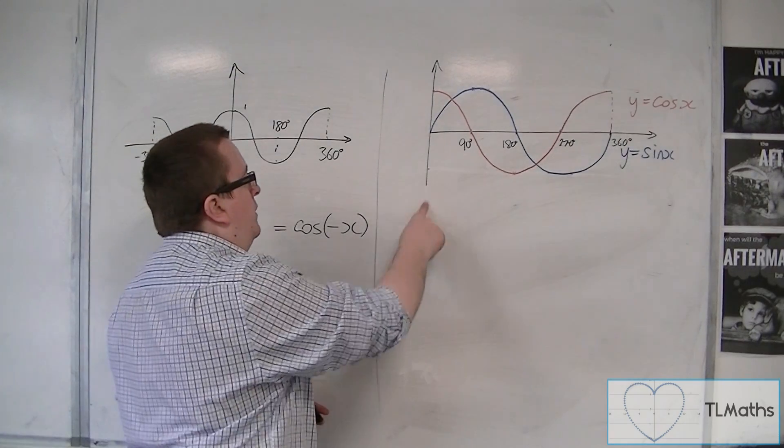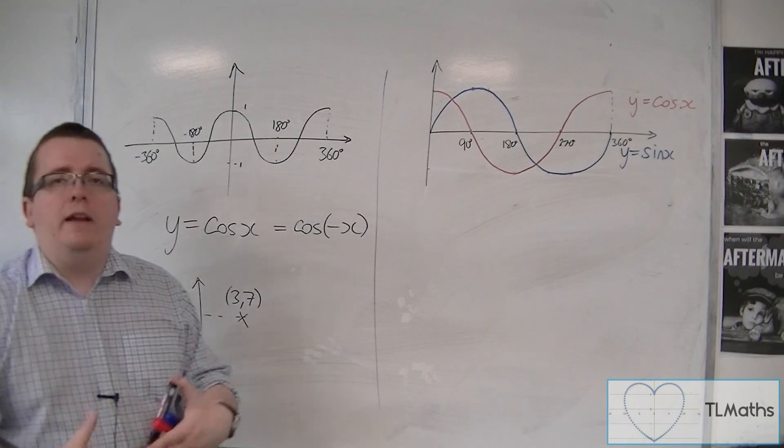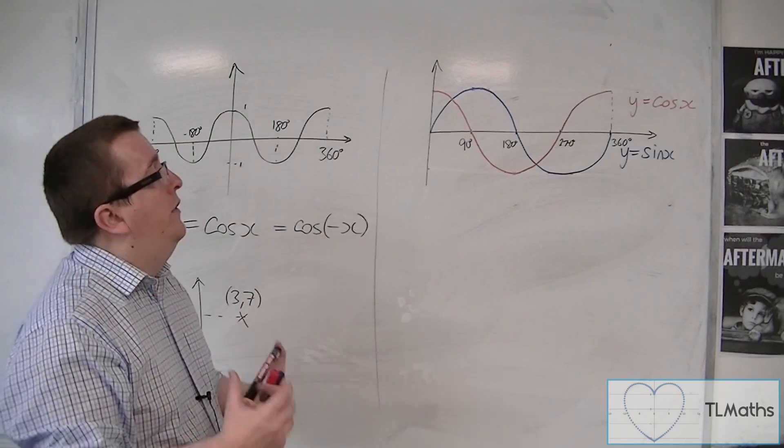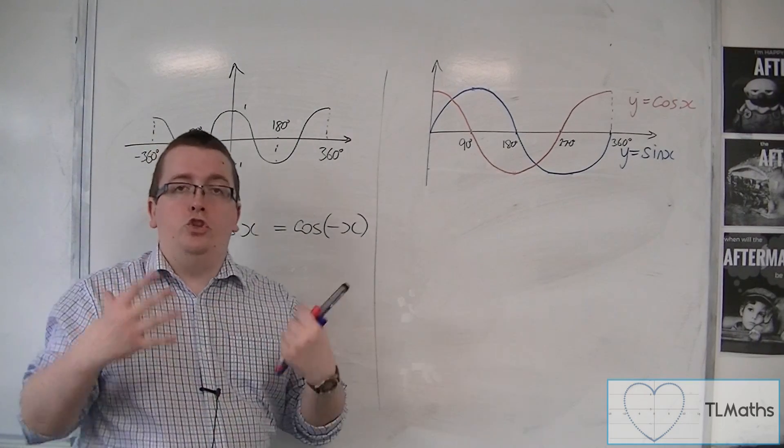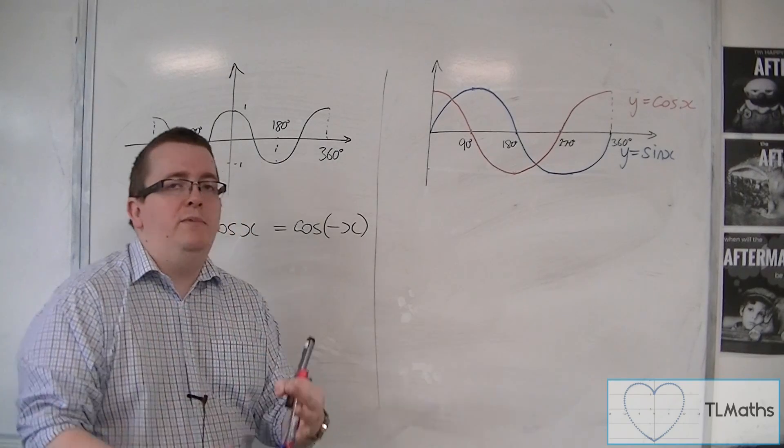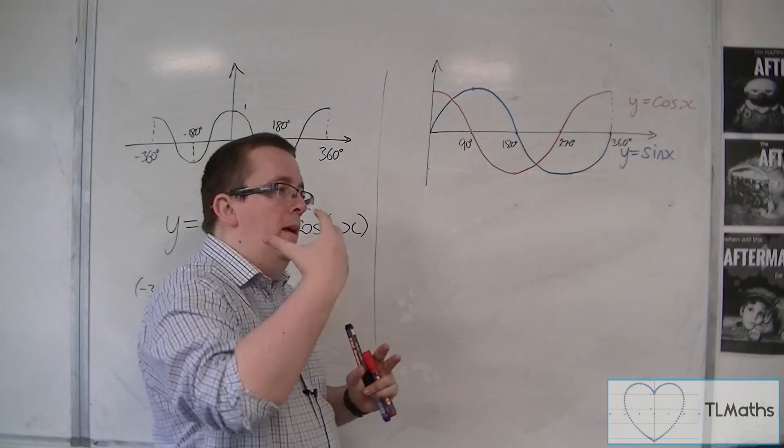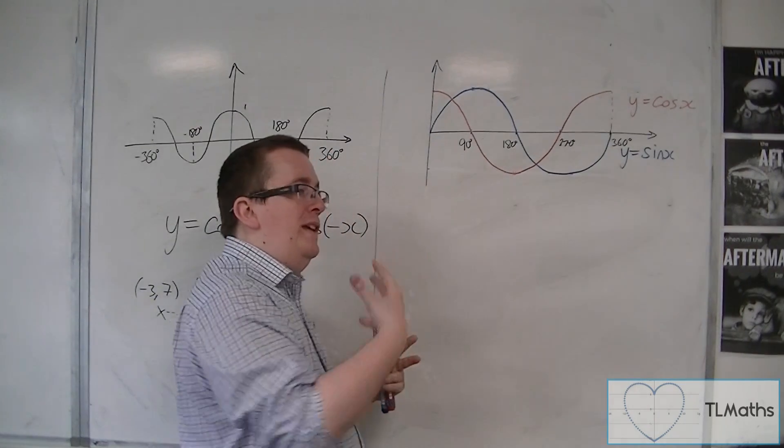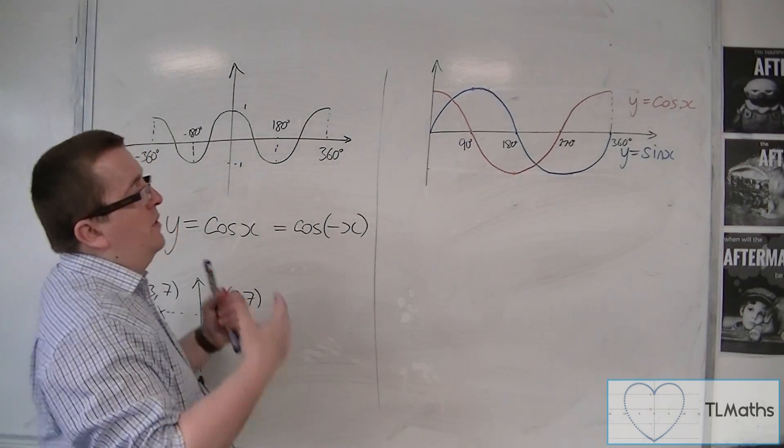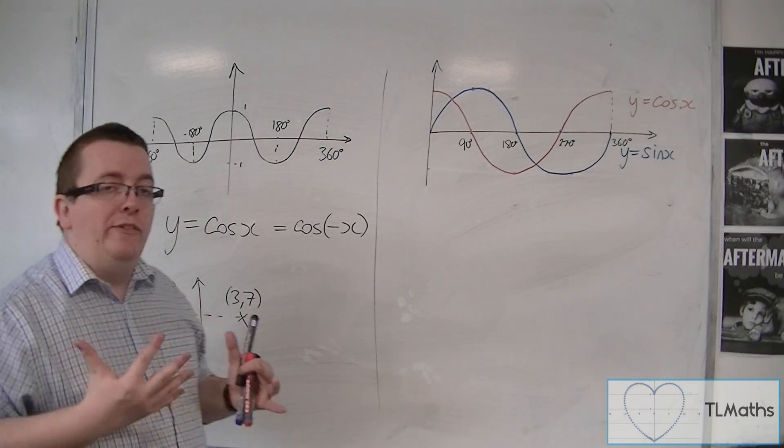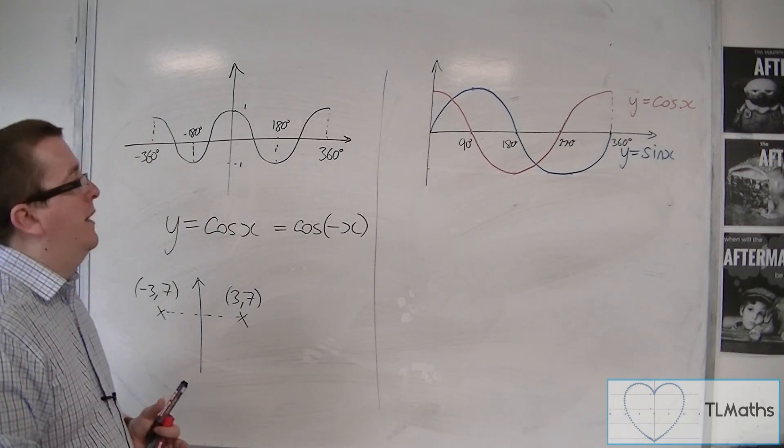Now, the thing about sine x and cos x is that they are exactly the same shape. They're the same shaped curve. Except that one has been moved along the x-axis a little bit. So, effectively, they are translations of one another.